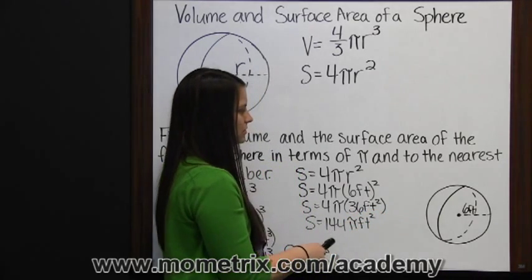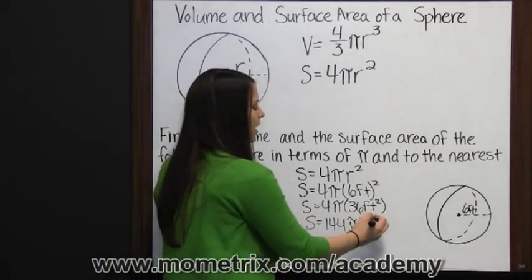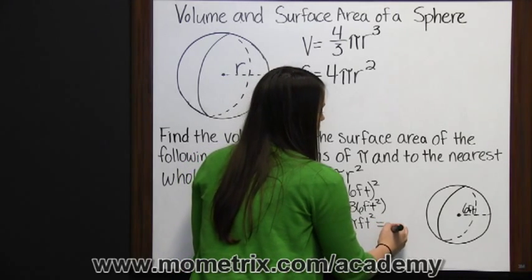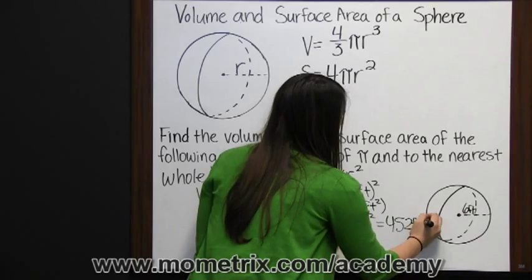So that's our answer in terms of pi. Then to find it to the nearest whole number, we need to multiply times pi, which gives us 452 feet squared.